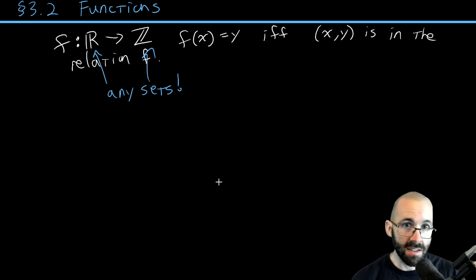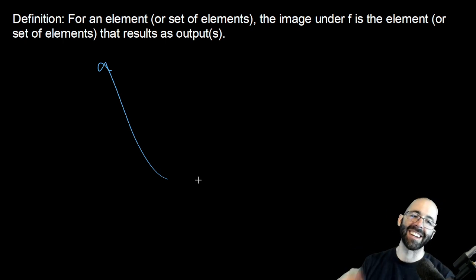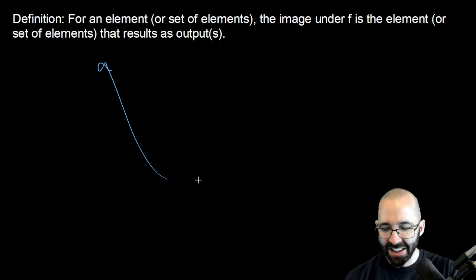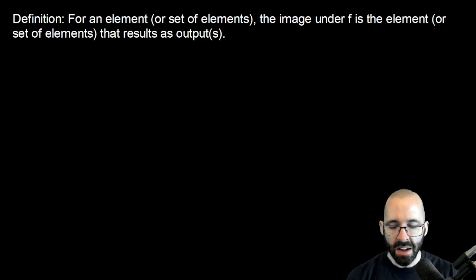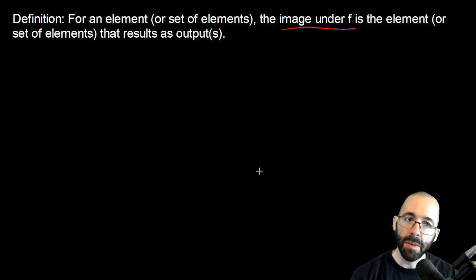But complex valued functions exist with complex numbers, imaginary numbers, that sort of thing. You can have functions with a domain of words, functions with the domain of anything. In fact we do come across that in a lot of computer science applications as well. Let's go one by one with some definitions. For an element or a set of elements, the image under f is the element or set of elements that results as output.